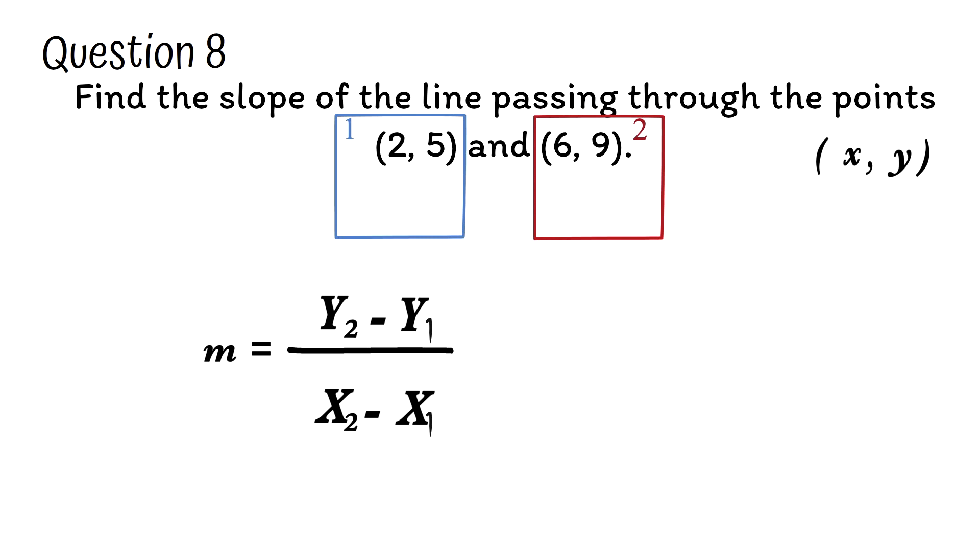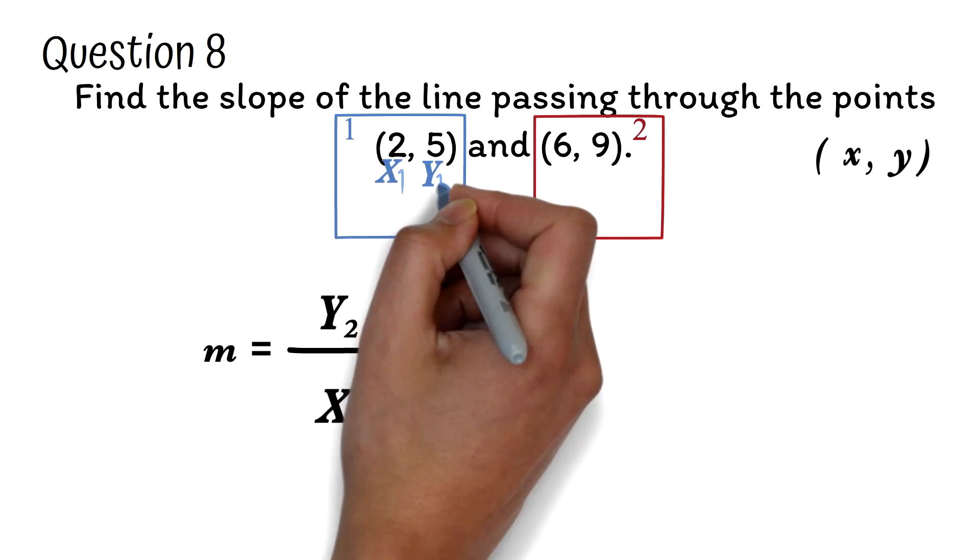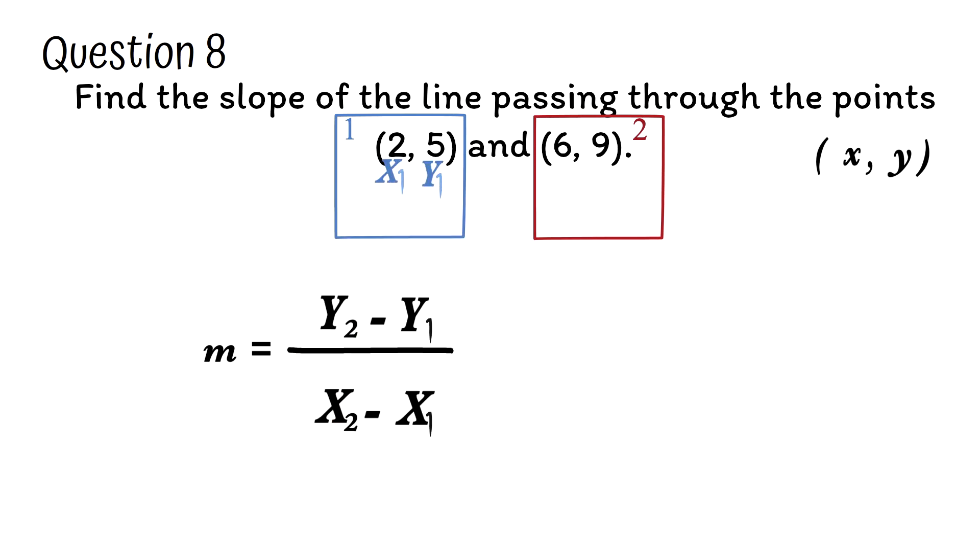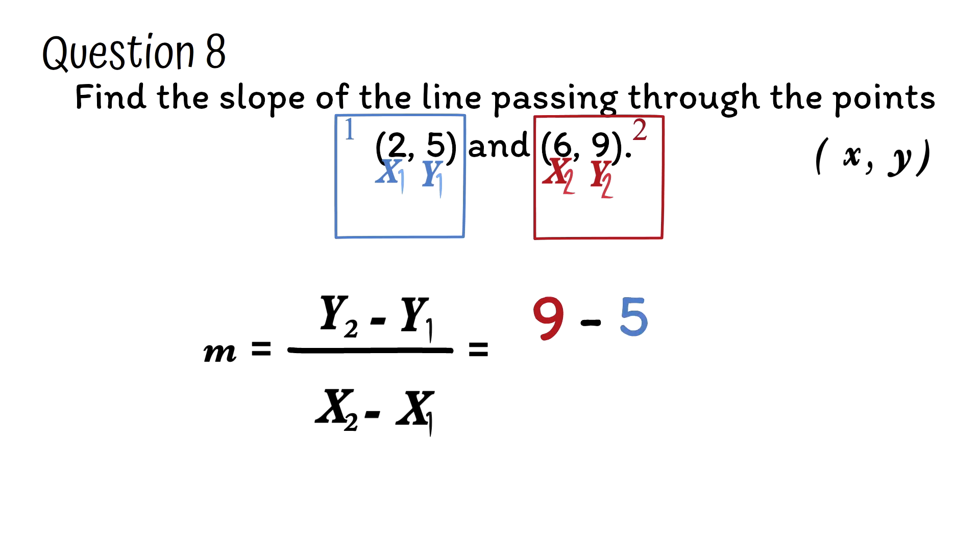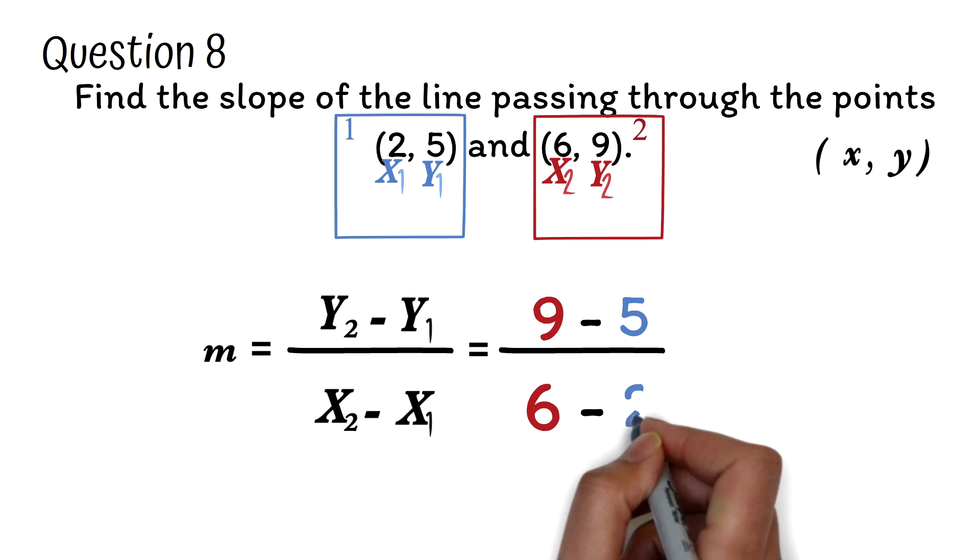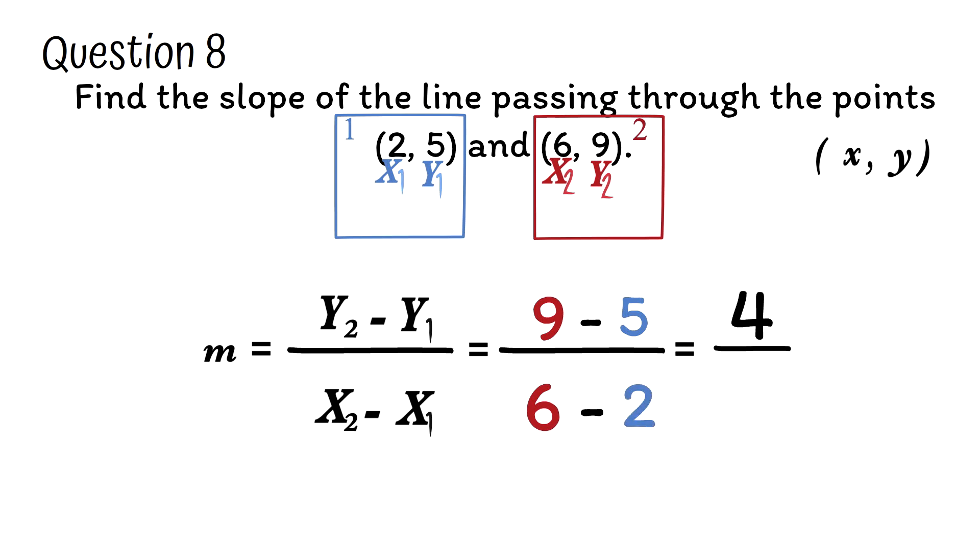Since we are calling this point 1, we will have x₁, y₁ here. Same thing for this. Since we are calling this our point 2, we can call this x₂, y₂. We just put the values into the formula. We have 9, which is y₂, minus 5, which is y₁, divided by 6 which is x₂, minus 2, which is x₁. We simplify. 9 minus 5 is 4, over 6 minus 2, which is also 4. 4 divided by 4 is 1. So the slope is 1.